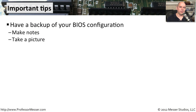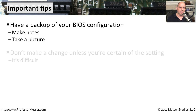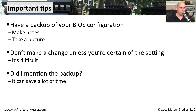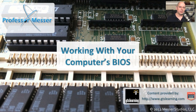Before you make any changes to your BIOS configuration, make sure you have some documentation that shows what it was originally — maybe make some notes on a sheet of paper. If you have a mobile device that can take pictures, take a picture of the screen. That way, if you need to put things back the way they were, you know exactly what the original settings were. You don't want to make any changes unless you're absolutely sure what those changes mean. There are a lot of different settings for timings and memory inside of the BIOS, and some of those could have an adverse effect on the operating system. If you've got a picture you can reference, it's very easy to go back to that backup and put things exactly the way they were. Configuring your BIOS is a relatively simple process, and if you follow these guidelines, you're going to have no problems working with your computer system's BIOS.